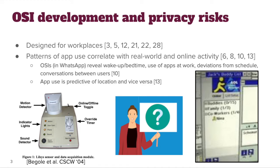Doe et al. found that which app you're using is predictive of your location and vice versa. So although they weren't studying OSIs specifically, OSIs represent a feature that can broadcast the same type of information to other users, and there might be privacy risks that have the same type of information leakage.